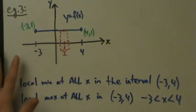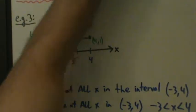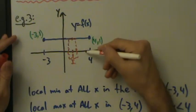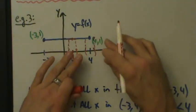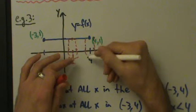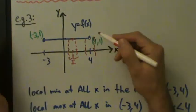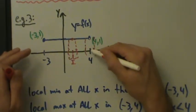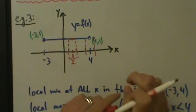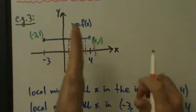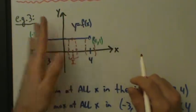Why not at the endpoints? Well, if you're at an endpoint, you can't put an interval around it. If you try to do that at x equals 4, the function is not defined to the right of 4, so there's nowhere for this interval to go. But for any number less than 4, you could find an open interval — it might have to be really super teeny tiny, but for any number less than 4, you can find an open interval around it that stays inside the function.